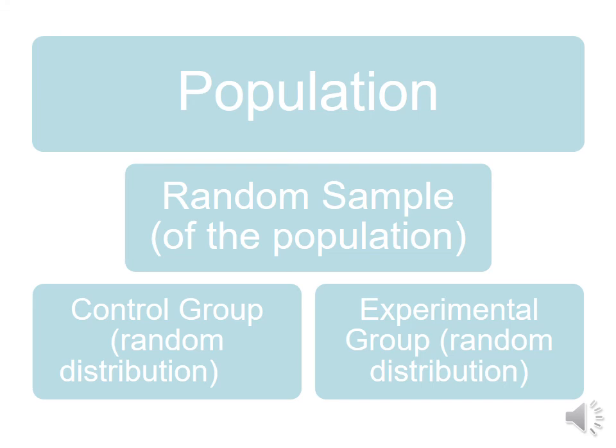Your population is the biggest group. Your random sample is what you pull from the population. From your sample, you will randomly assign people into your control group and your experimental group. When we say random, we mean without intent. The sample is what you pull from a defined population — you have to know who you're talking about. Assignment means you randomly, without intent, assign people to either a control group or an experimental group.